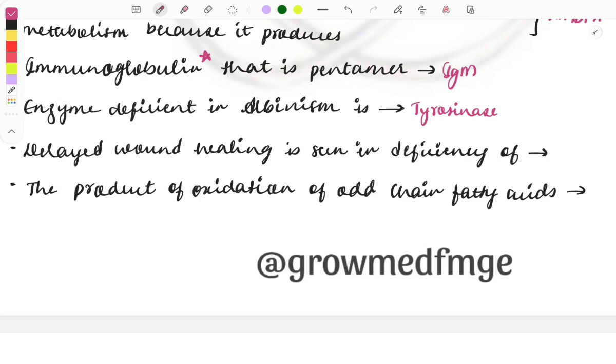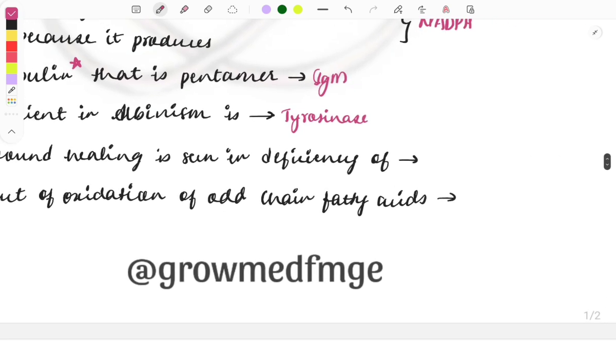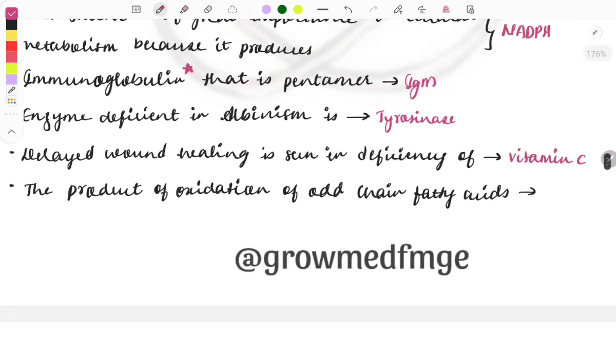Delayed wound healing is seen in deficiency of which vitamin? It is vitamin C, because vitamin C is involved in the post-translational modification of the collagen. If there is defect in the collagen, then there will be defect in the formation of the connective tissue. Then it will lead to this delayed wound healing. So vitamin C deficiency will cause delayed wound healing.